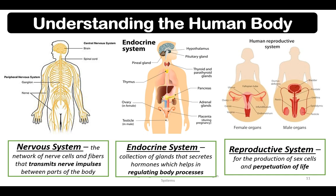The endocrine system is the collection of glands that secretes hormones which help regulate body processes. Examples include the testes in males, the ovaries in females, and the pituitary gland located beneath the brain — all part of the human endocrine system.